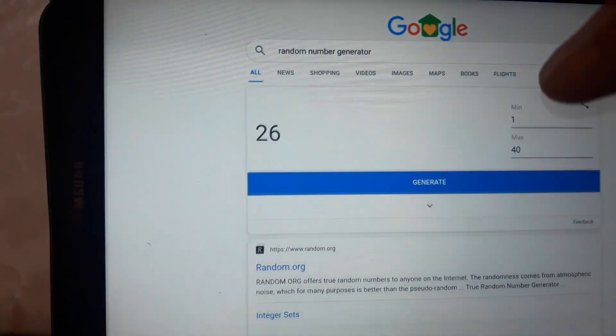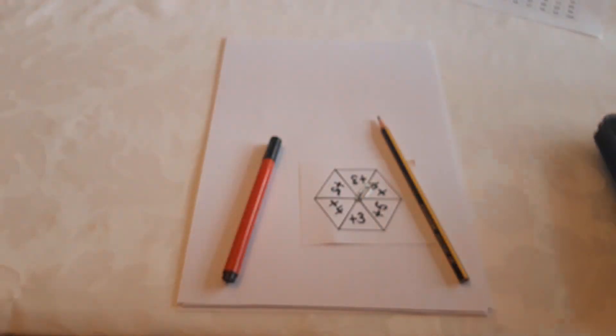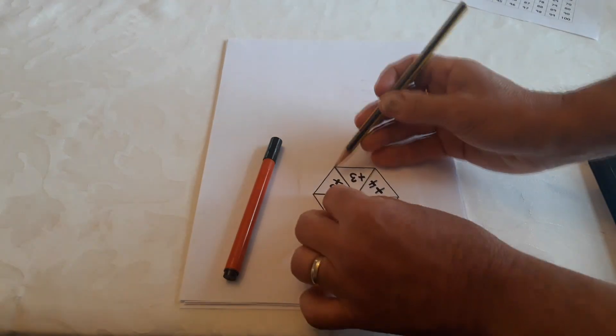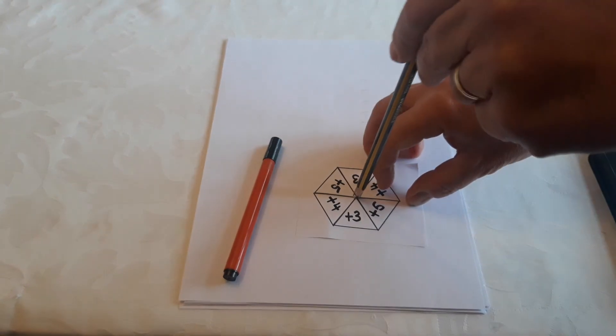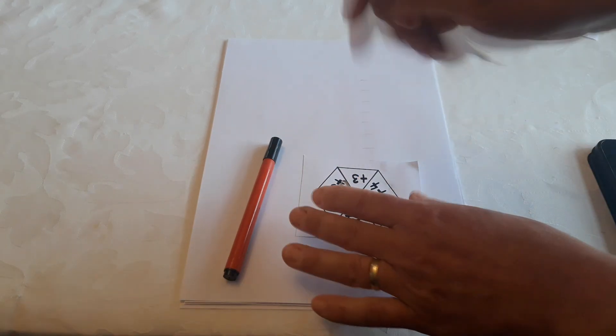So shall we get started? First of all, choose a random number and my number is 24. And then I'm going to use my spinner to decide my step size. Can you see? And my step size is counting in fives.